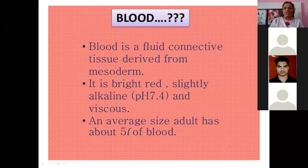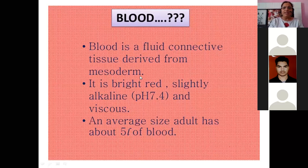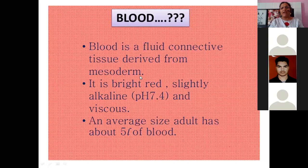Blood is a connective fluid tissue derived from mesoderm. It is a connective tissue. It is bright red in color, slightly alkaline with a pH of 7.4, and viscous — viscous means thick. An average-sized adult has about five liters of blood in their body.